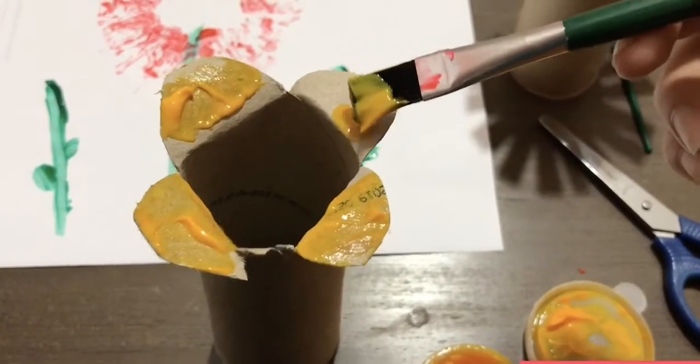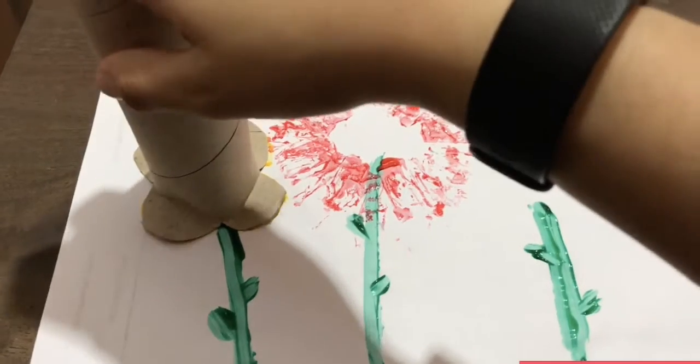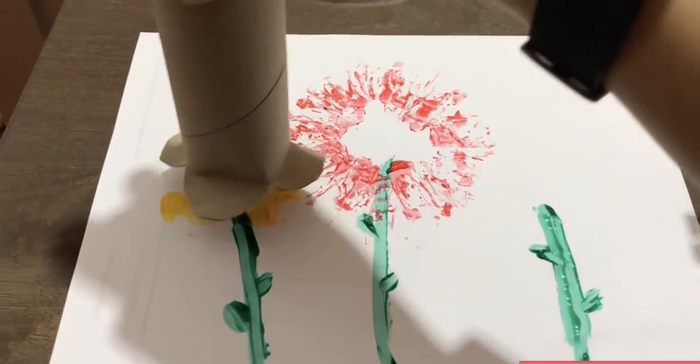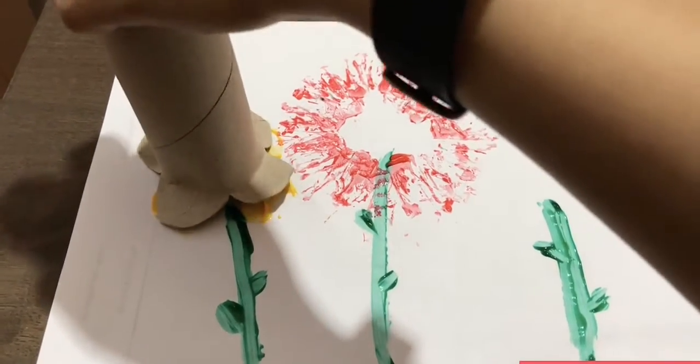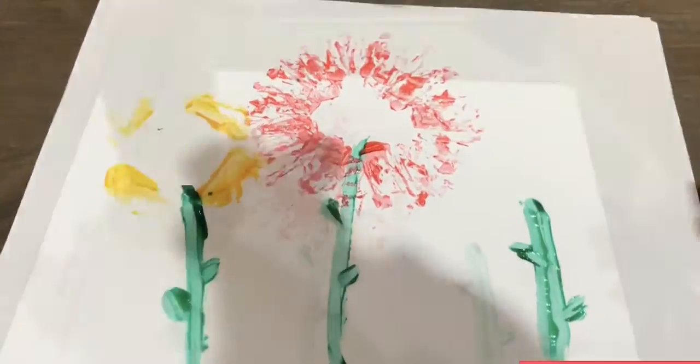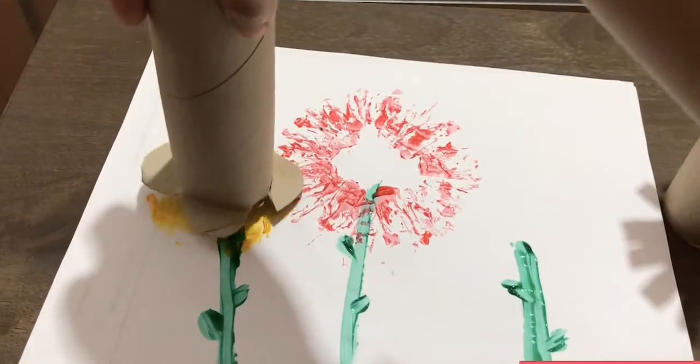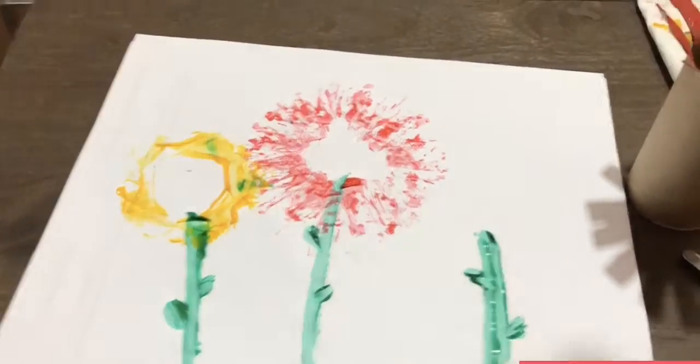For the second one, we're going to use the color yellow. We're going to stamp it, flip it around a little bit to get a rounder version of it. There you go.